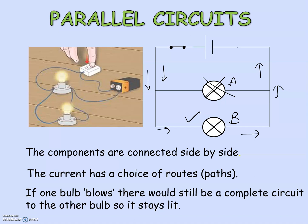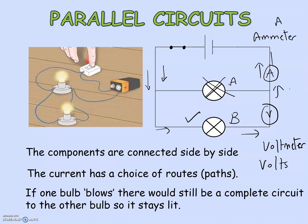In a series circuit you will find an ammeter, and in a parallel circuit you will have a voltmeter. The voltmeter is only found in a parallel circuit — it measures the voltage or the potential difference in volts. The ammeter measures the current in amps. So if bulb A goes out, bulb B still works, or if B goes out then A still works, because there is a two-way system — a different route for the current to flow.